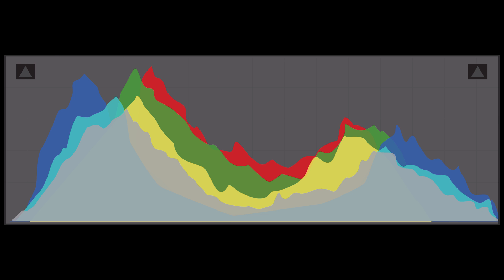Most people who have problems with exposure have those problems because they trust the screen on the back of their camera, and that's a problem because that screen can be brightened up or darkened down based on your preference, whereas the histogram is a scientific measure of what your exposure actually looks like.